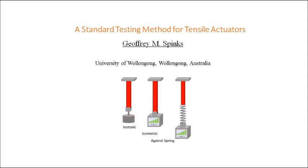Hello everyone, my name is Geoff Spinks from the University of Wollongong. In this video I'll explain what we've been doing to develop a standard test method for tensile actuators or artificial muscles. The method is simple and quick, and it allows the determination of actuation parameters obtained from more traditional tests such as isotonic, isometric, and when testing against a spring.